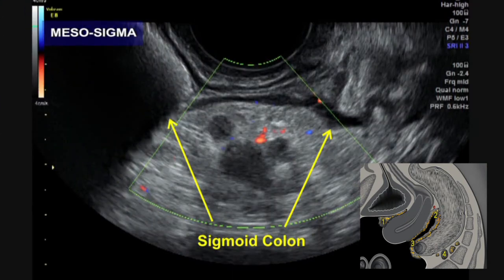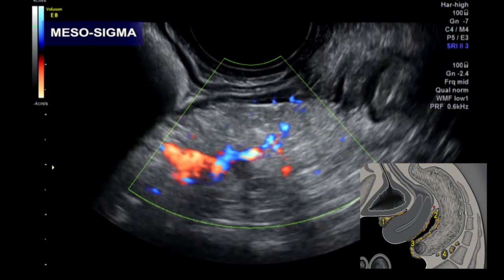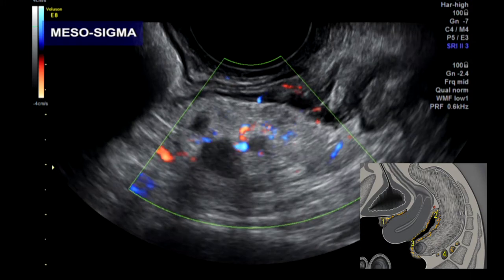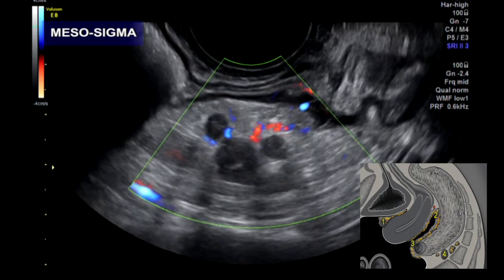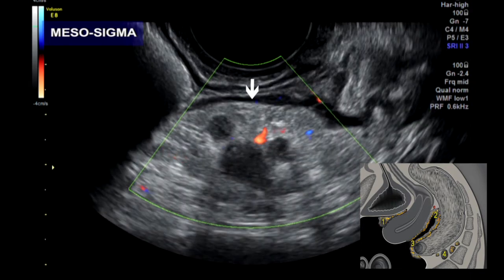Lastly, we move to the mesentery of the sigmoid colon, where hypoechogenic nodules are contrasting nicely with echogenic mesenteric fat tissue. You may be asking how we can tell where exactly the mesentery is located — it is right here between the posterior wall of the sigmoid colon and the sacral bone, which is typically presented as an echogenic line.